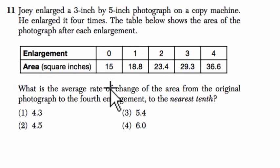They want to know what the average rate of change of the area from the original photograph to the fourth enlargement is to the nearest tenth. That's a way of saying they want us to find the slope between these two points.